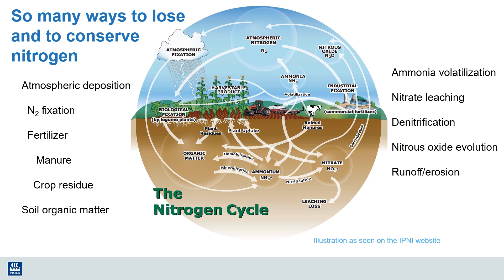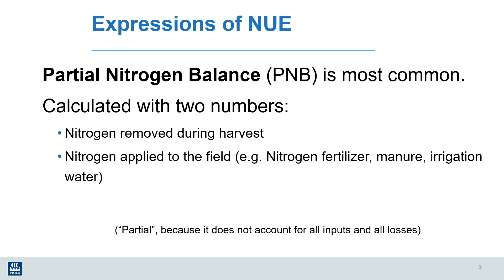Getting the most recovery and the greatest value from added nitrogen fertilizer is what we call nitrogen use efficiency. So let's take a closer look at what we mean by that. Just as a quick review, the most commonly used method to calculate nitrogen use efficiency is what we call a partial nutrient balance. It's measured by looking at the common inputs onto a field and comparing that with the nitrogen removed in the harvested crop. The name 'partial' comes from the fact that we're not measuring all the ways nitrogen gets added or lost — just the primary inputs and outputs.